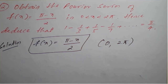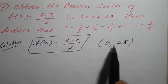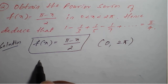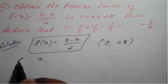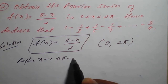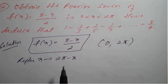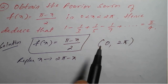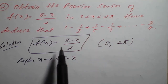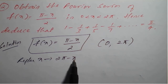If the interval is -π to +π, we need to replace x by -x. But if the interval is 0 to 2π, we need to replace x by 2π - x. This is very important. If the interval is -π to +π, x will be replaced by -x directly. But if the interval is 0 to 2π, x will be replaced by 2π - x.